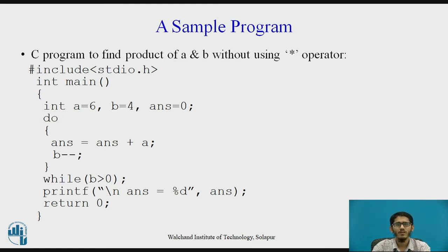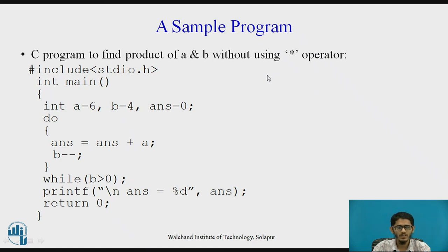We have a sample program using the Do While Loop: finding the product of two numbers A and B without using the multiplication operator. We need to find the product of A and B without the multiplication operation. This can be done using successive addition.